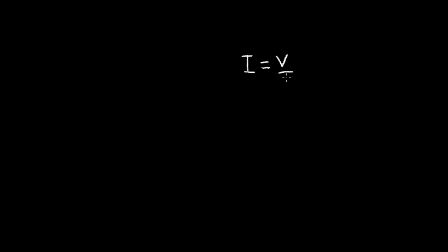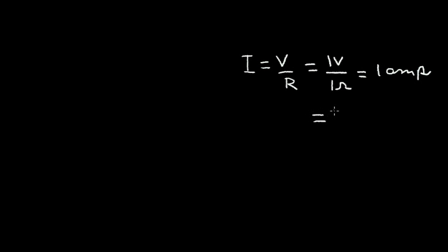In this video I want to talk about voltage divider circuits, but before I do that let's talk a little bit about units. We know from Ohm's law that current is equal to voltage divided by resistance. Normally voltage will be in volts, so one volt divided by one ohm gives us one amp of current flow. One amp is actually quite a large current in most of electronics, so in this video I'll use kilohms instead of ohms, which gives us current in terms of milliamps — one volt divided by one kilohm equals one milliamp.